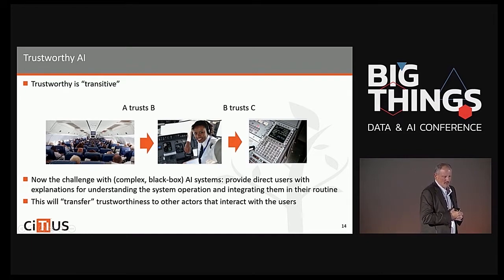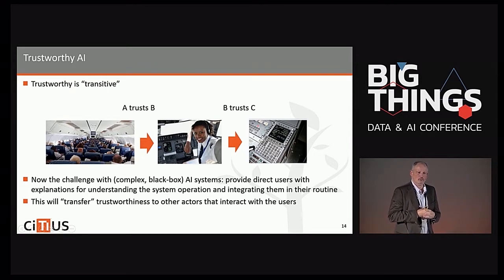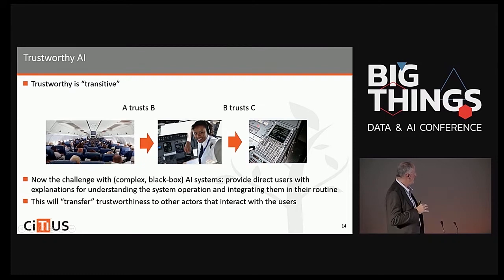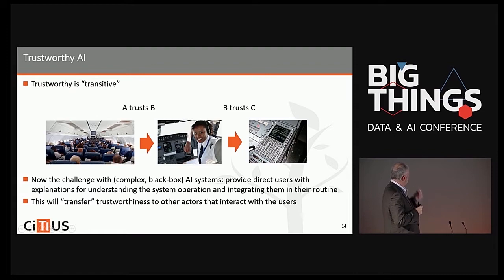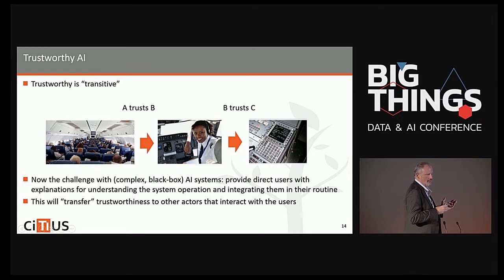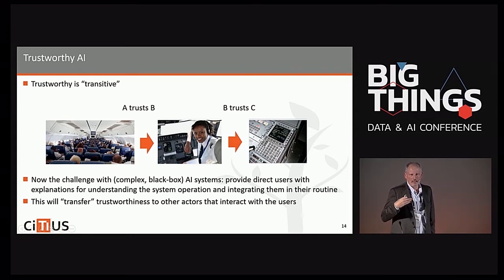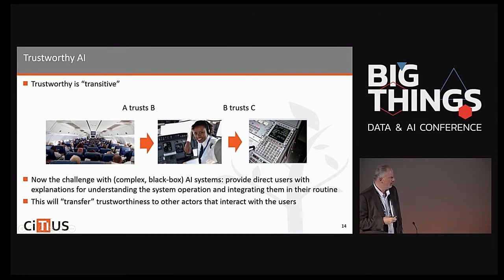Related with trustworthy AI, it's interesting to note that we don't need to provide explainability to all users of these systems — mostly to those directly responsible for their operation, because there is a transitivity property with trustworthiness. For example, people flying are confident in the pilot, and the pilot is confident in the autopilot, so passengers are also confident in the autopilot — not because of their own experience, but because they trust the professional who trusts it.